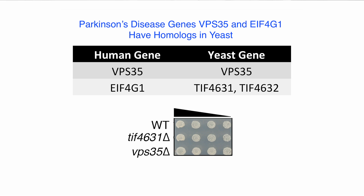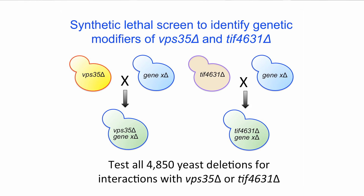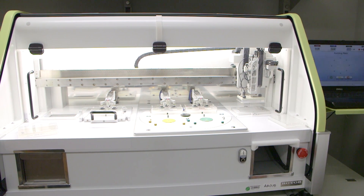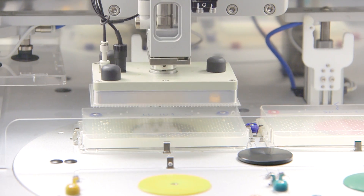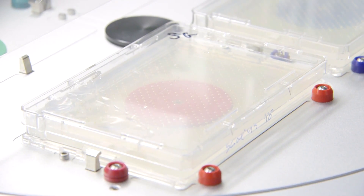These genes are nonessential, so they can be deleted without causing growth defects. I performed a screen to identify genes that I could delete in combination with either TIF4631 or VPS35 that would cause a growth defect. This type of a screen is called a synthetic lethal screen and is a powerful way to identify genes that function in similar cellular processes. I used an automated method to combine each of the 4850 nonessential haploid deletions with either the VPS35 deletion or the TIF4631 deletion by mating.